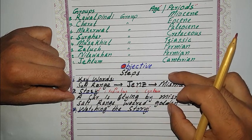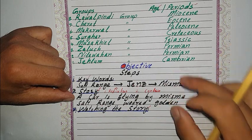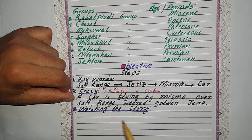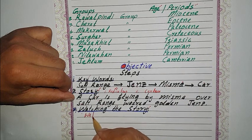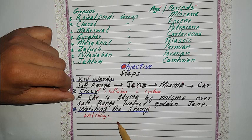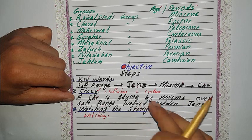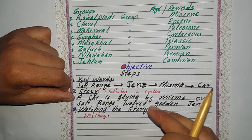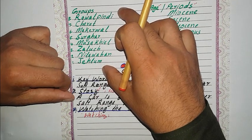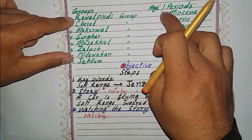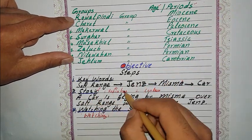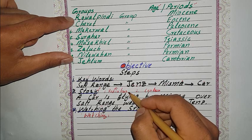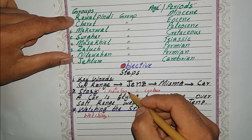Now the two steps are ready. The third step is to watch this story just like you are watching a movie. Close your eyes, try it, watch it — and then you will never forget these eight group names of the Salt Range in sequence, according to their age and period of deposition. I emphasize that the story must be ridiculous, because ridiculous things are easy for the mind to remember.